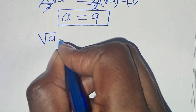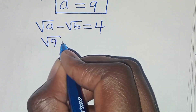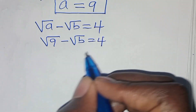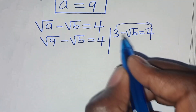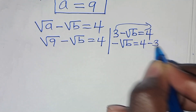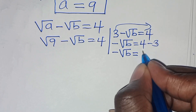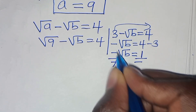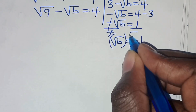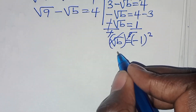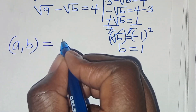Continuing: −√b = 1, so dividing both sides by −1 gives √b = −1. Squaring both sides gives b = 1. Therefore in Case 1, the solution is a = 9, b = 1.